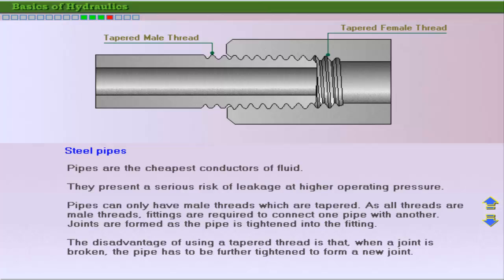Steel pipes, the cheapest option, also pose a serious risk of external leakage at higher operating pressures. Pipes typically use male tapered threads for compression connections with fittings, which are highly prone to external leakage. In addition, because pipe cannot be bent, numerous connections may be required to join pipes or change directions, greatly increasing the possibility of external leakage.